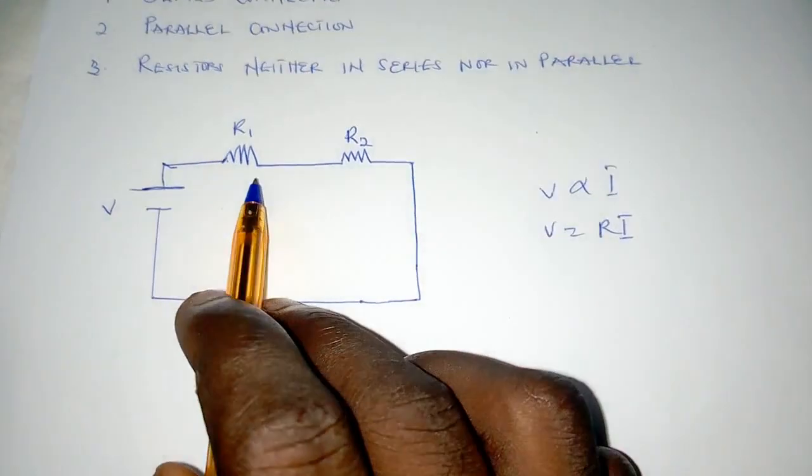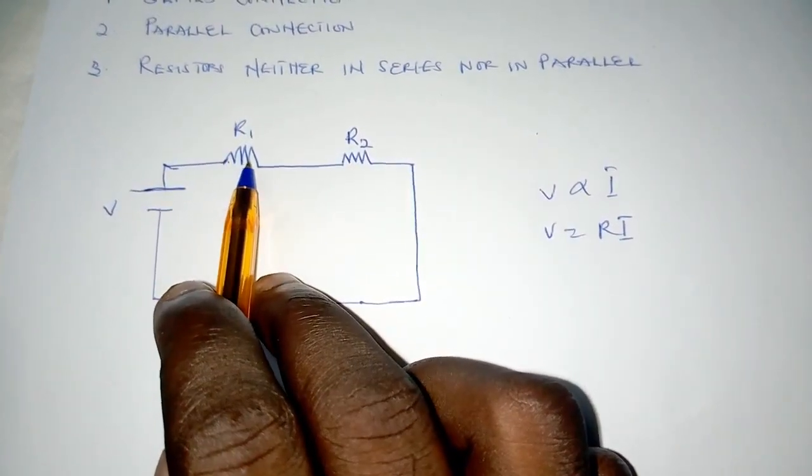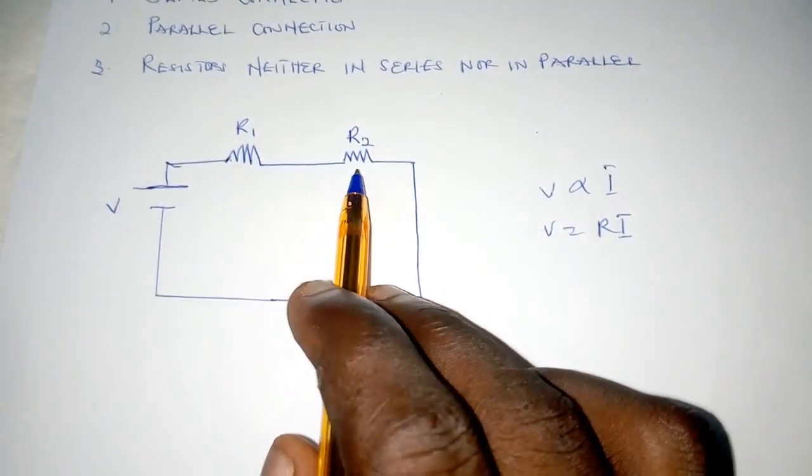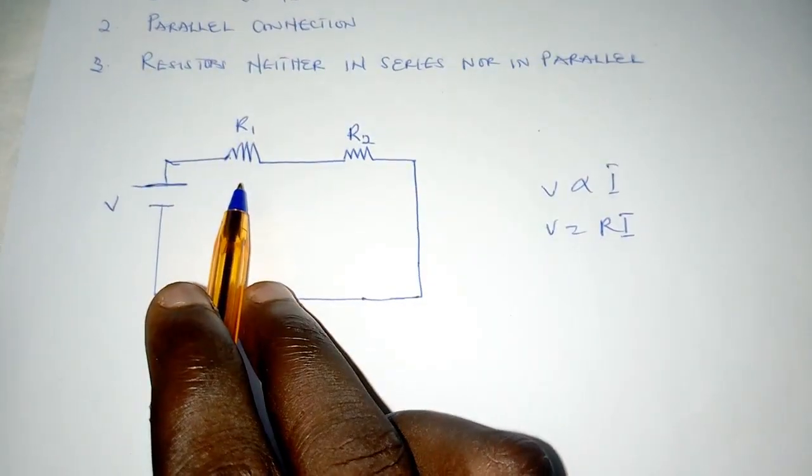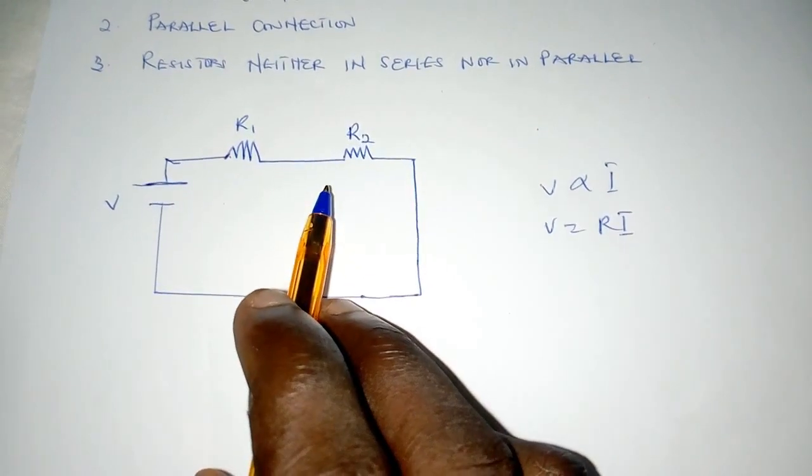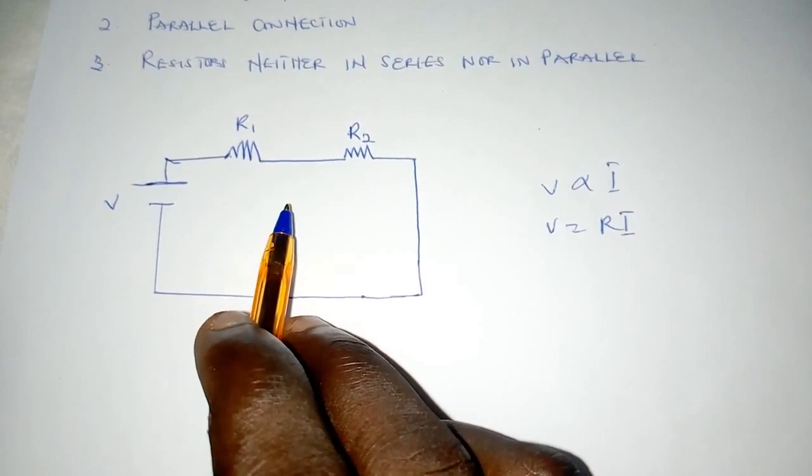And so we can say that because there is no visible node between these two resistors, which is R1 and R2, then we can say that resistor R1 and R2 are in series, and that the same current flows through them.